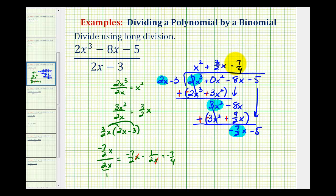Now we need to multiply negative 7 fourths and our divisor. So we'll have negative 7 fourths times 2x minus 3. With the first product, we're going to have negative 7 halves x. The second product we're going to have plus 21 fourths.